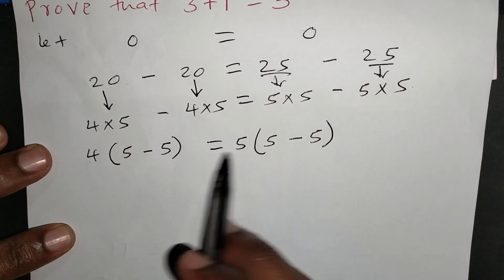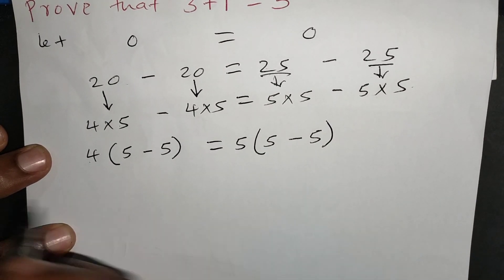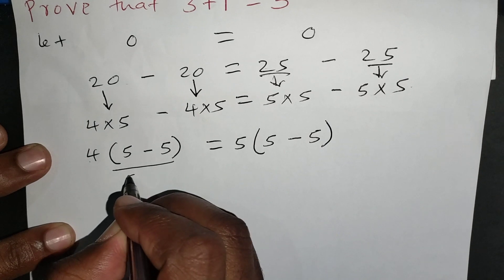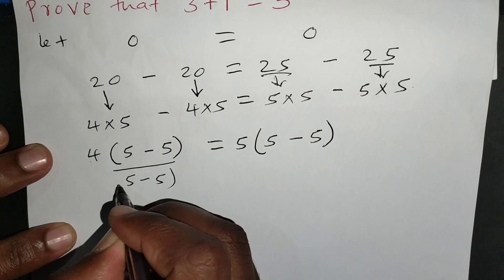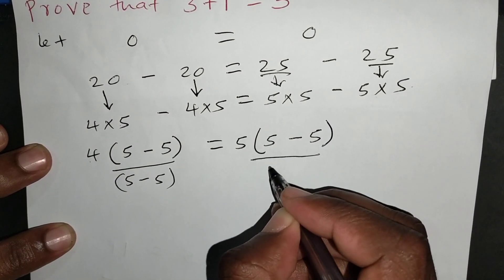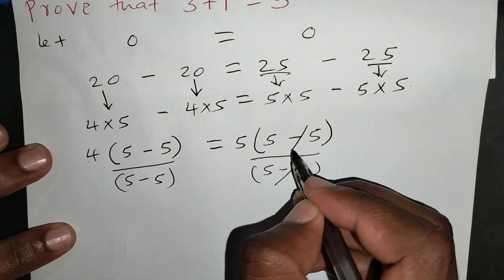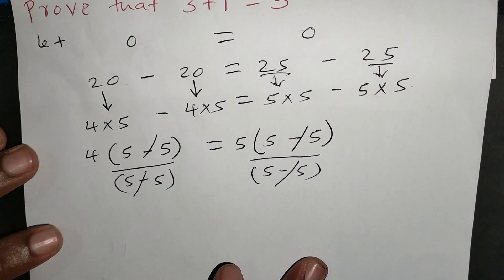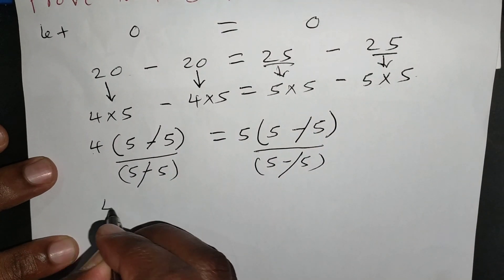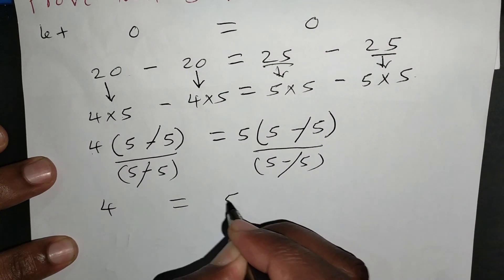Now, you can see we have numbers in the bracket which are exactly the same. So I want to divide both sides by 5 minus 5 so that they cancel out. I also divide this side by 5 minus 5. So the 5 minus 5 will cancel out. The 5 minus 5 will also cancel out. So I'd remain with 4 being equal to 5.